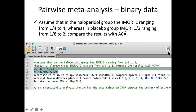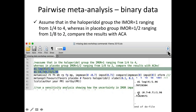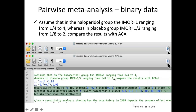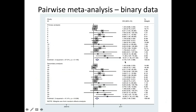Now let's assume that in the haloperidol group the IMOR equals 1 ranging from 0.25 to 4, and in the placebo group the IMOR is 0.5 ranging from 0.125 to 2, comparing results with ACA. Deriving the two standard deviations, both equal 0.71, so we define a single standard deviation applying to both groups. Running the command, there is a difference in summary effects, and the study weights differ between the two analyses because we account for missing participants in studies with missing outcome data.